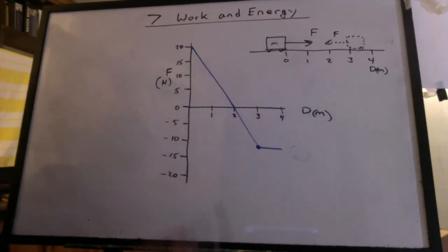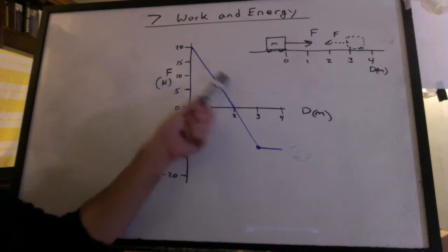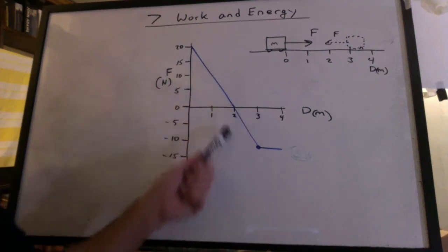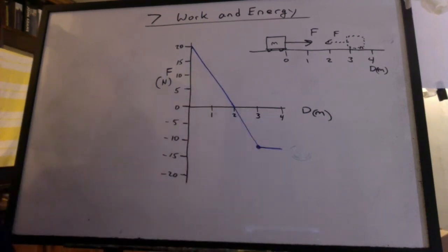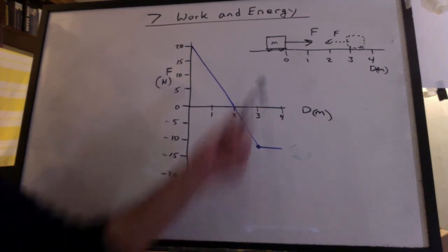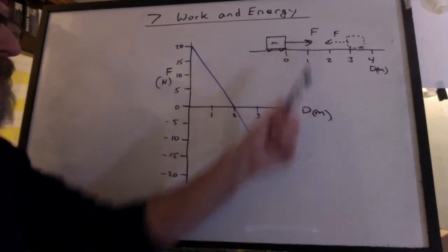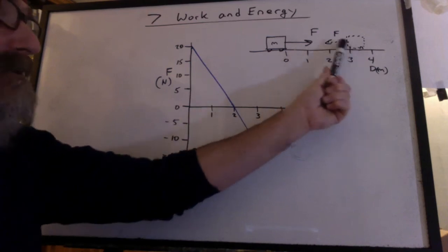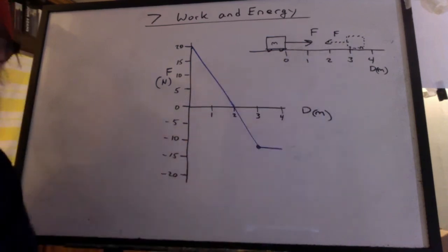So what is happening to the cart in this portion of the graph? Think about it for a second. It's on wheels. It's got to speed up. And then once I'm past here, the force is reversed. It's got to slow down.